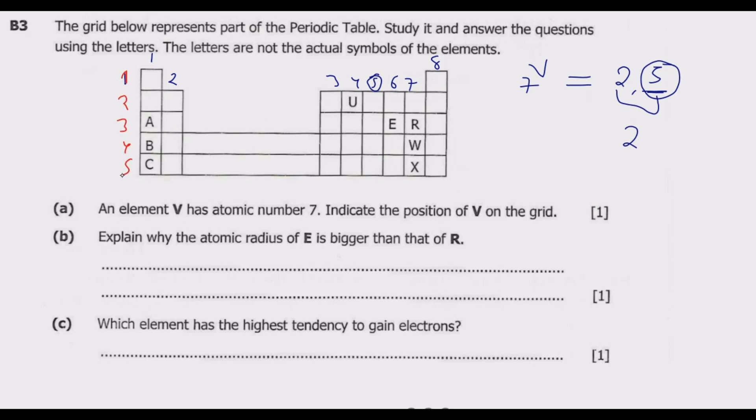So it will have period 2, then group 5. So we move in here up to this point. So this is where V should be. So this is what you need to do: do the electronic configuration, then the number of shells tells you the period in which this V would be.